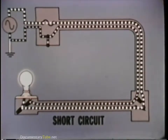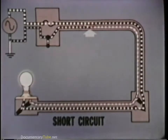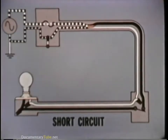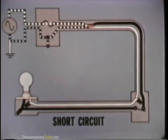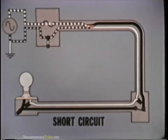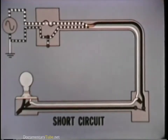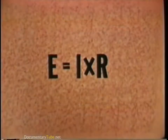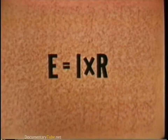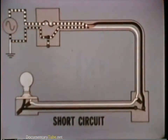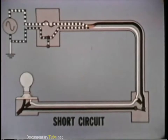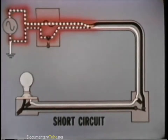A short circuit results when two bare conductors are permitted to come into contact with each other. The current no longer flows through the entire circuit — it is shunted directly from the hot conductor to the neutral conductor. When this occurs, there is only a very small amount of resistance in the circuit. According to Ohm's law, for a constant voltage when the resistance is lowered, the flow of current goes up. This increase in current can cause heating of the wires and is the cause of many electrical fires.